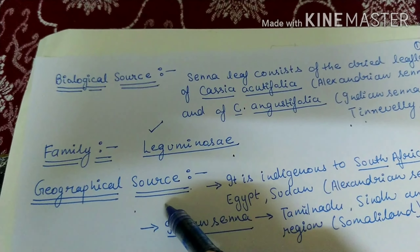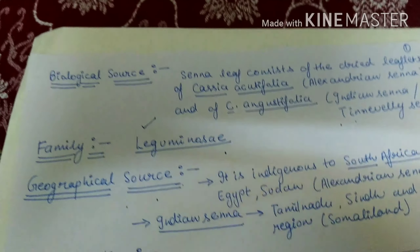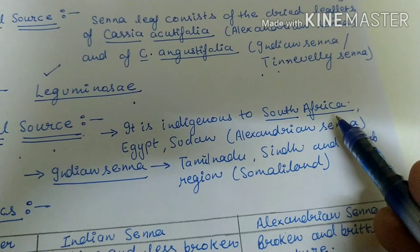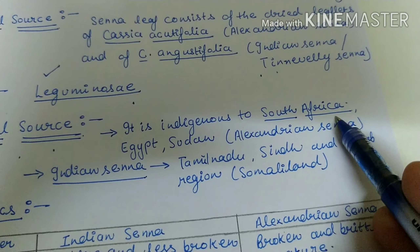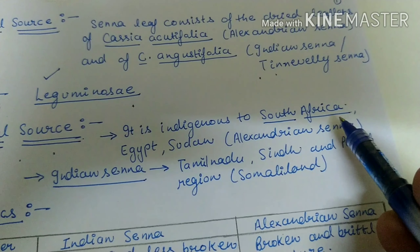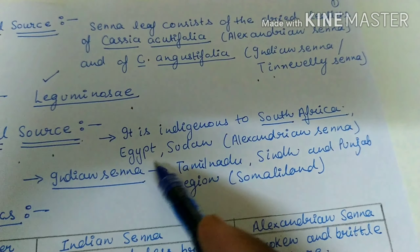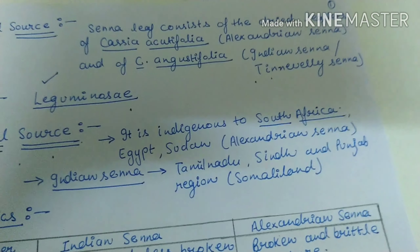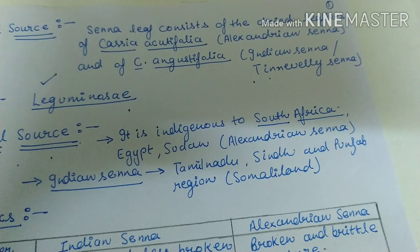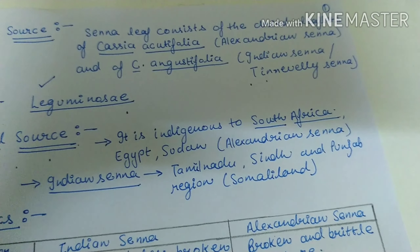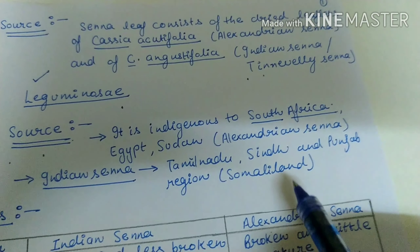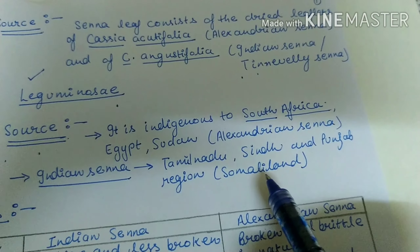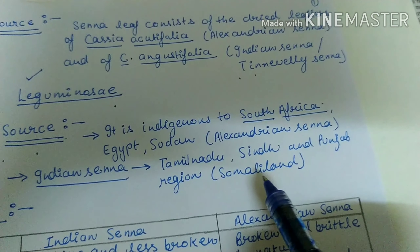Now I will discuss the geographical source of Senna. Alexandrian Senna is indigenous to South Africa and widely grows and is sometimes cultivated in Egypt and Sudan. Tinnivalli Senna is cultivated in Ramanathapuram districts of Tamil Nadu and also grows in Swaziland, Sindh, and Punjab.